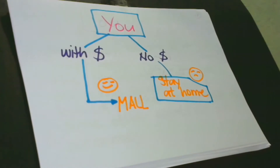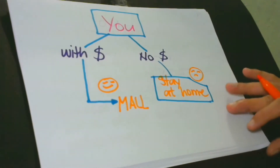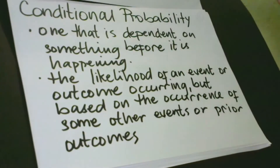Many times, we make decisions whose outcome is dependent upon another. For example, you would like to go to the mall if you have some money this week. Here, going to the mall is dependent upon having some money this week. You cannot go if you do not have some money this week. This kind of problem is explained by conditional probability, which is defined as one that is dependent on something before it is happening.